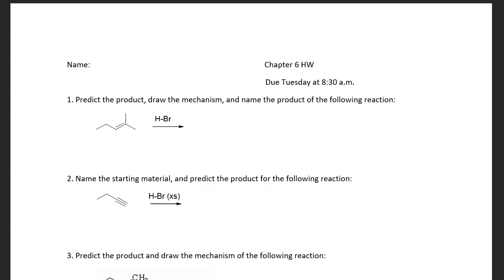For chapter six homework, question one: predict the product, draw the mechanism, and name the product in the following reaction. I always like to start with the mechanism — it gives me an idea of what the product is going to be. Here we have an alkene and HBr, so we have a strong acid. My nucleophile is the electrons in the double bond; my electrophile is the hydrogen. We're going to do a proton transfer reaction.